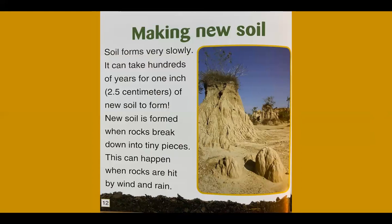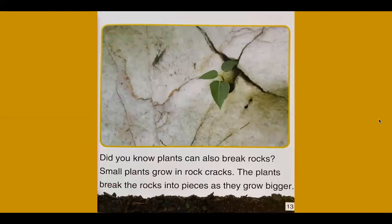Soil forms very slowly. It can take hundreds of years for one inch of new soil to form. New soil is formed when rocks break down into tiny pieces. This can happen when rocks are hit by wind and rain. Plants can also break rocks — small plants grow in rock cracks, and break the rocks into pieces as they grow bigger.